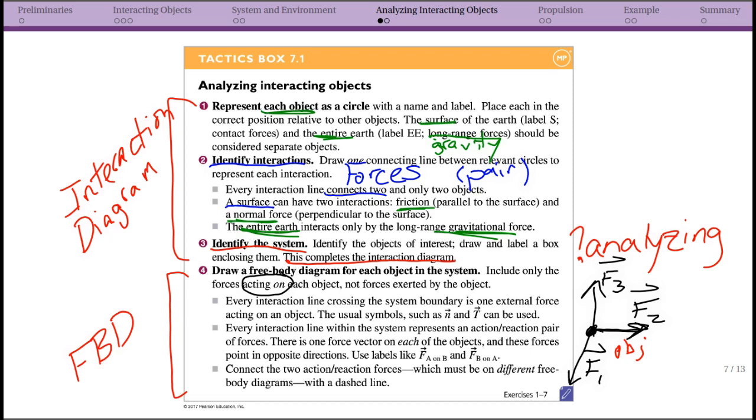When you go back to your interaction diagram, you can use this to identify your forces. Every line crossing the system boundary is one external force. Internal forces are an action-reaction pair, and because of that, we know that there's a relationship between them.